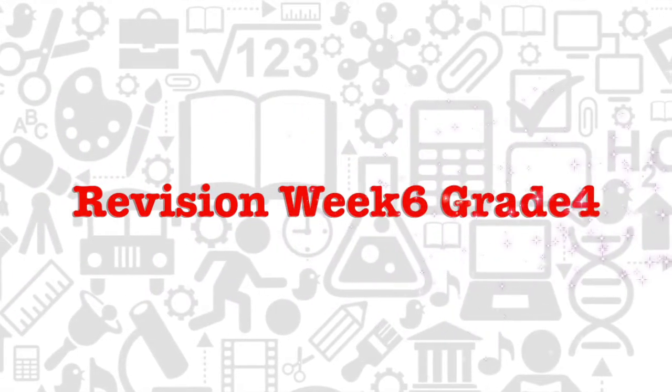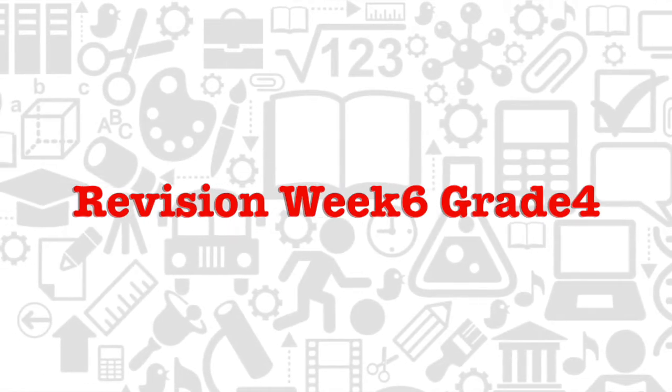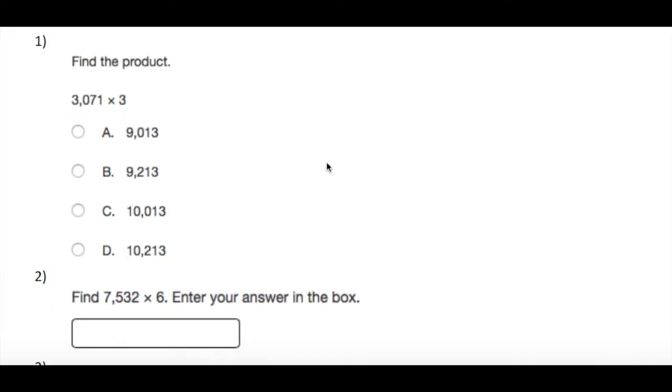Bismillah wa salatu wa salam wa ala rasulillah. Hello guys, today we have a revision for quiz 3. First question: find the product of 3,071 times 3. So I will multiply 3,071 multiplied by 3. As we know in multiplication, we begin from right to left and multiply this number with each digit in that number.